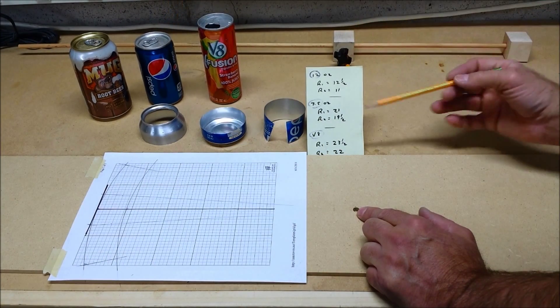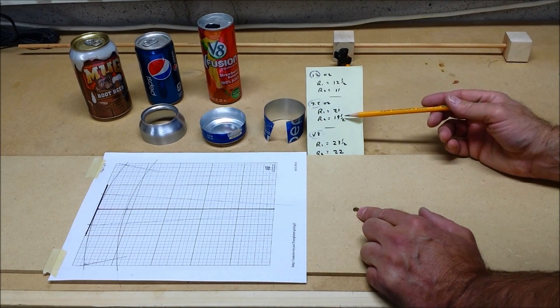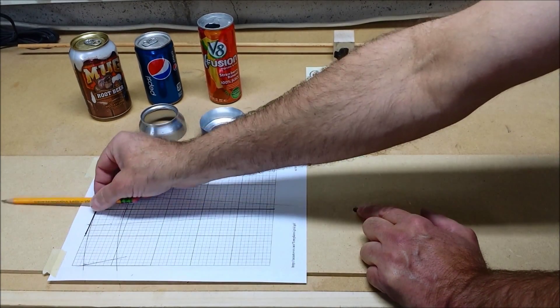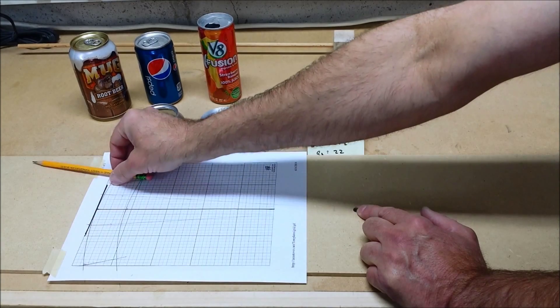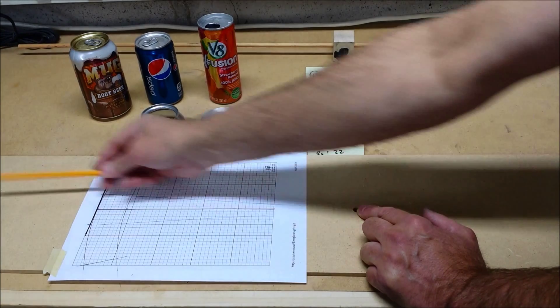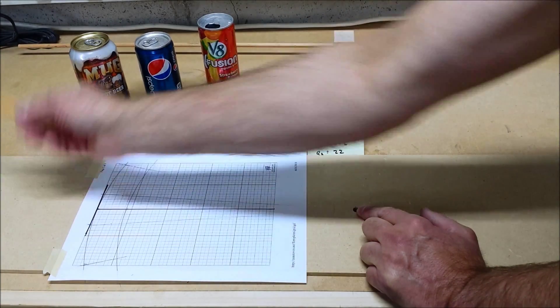For the 7½-ounce can, the two radii are 21 and 19½. So further up, same center, it's going to be up here somewhere. And then for a V8-size can, 23½ and 22, so all the way to the top of this board.